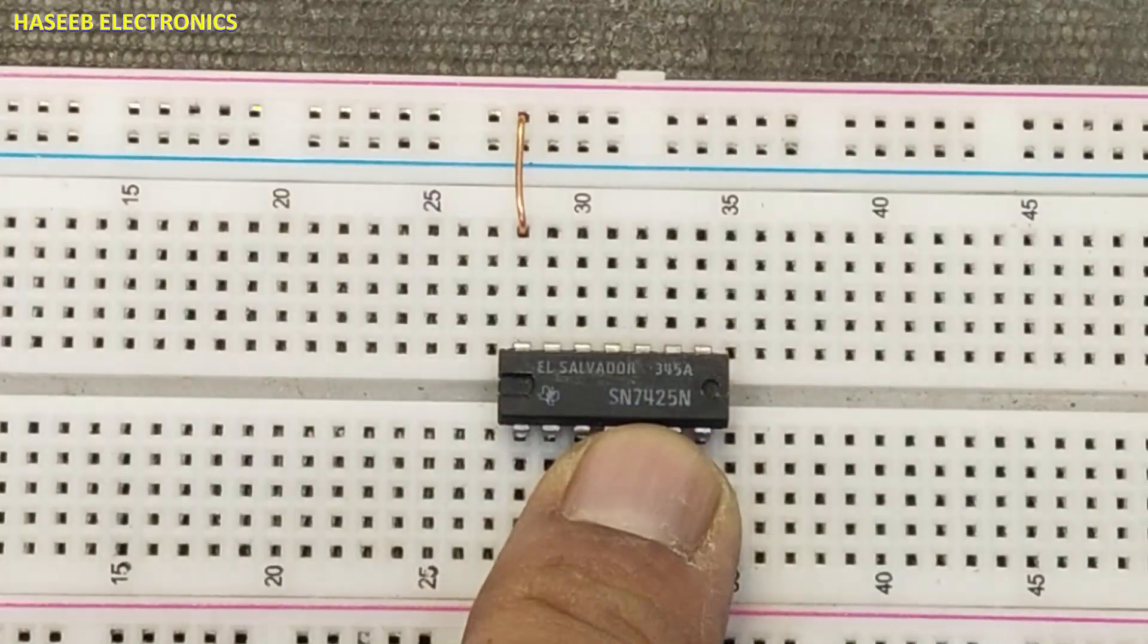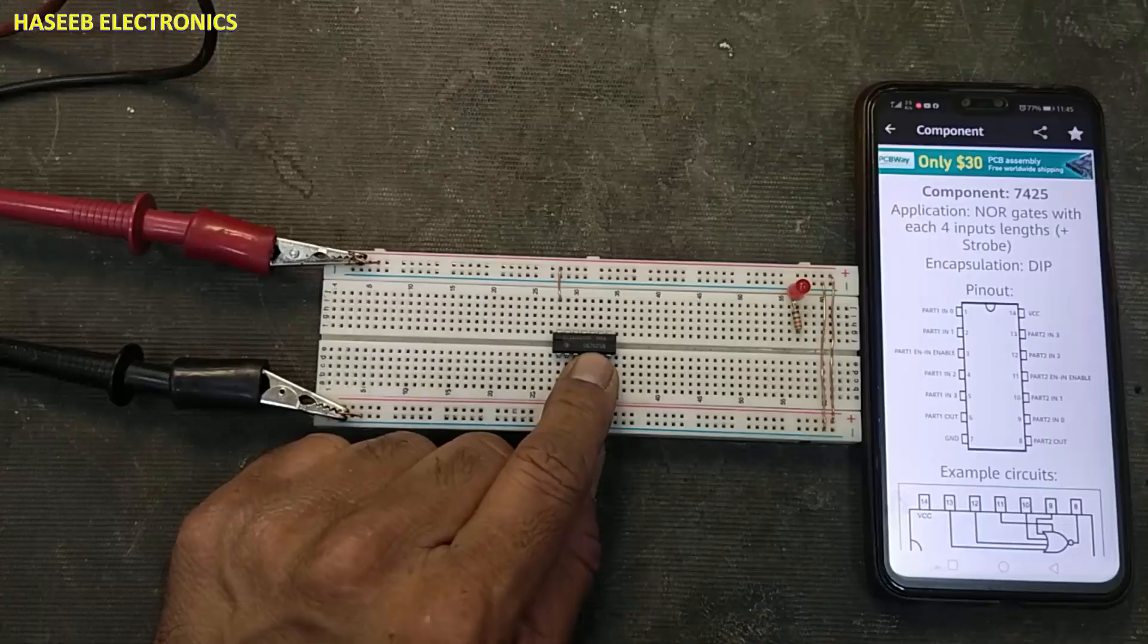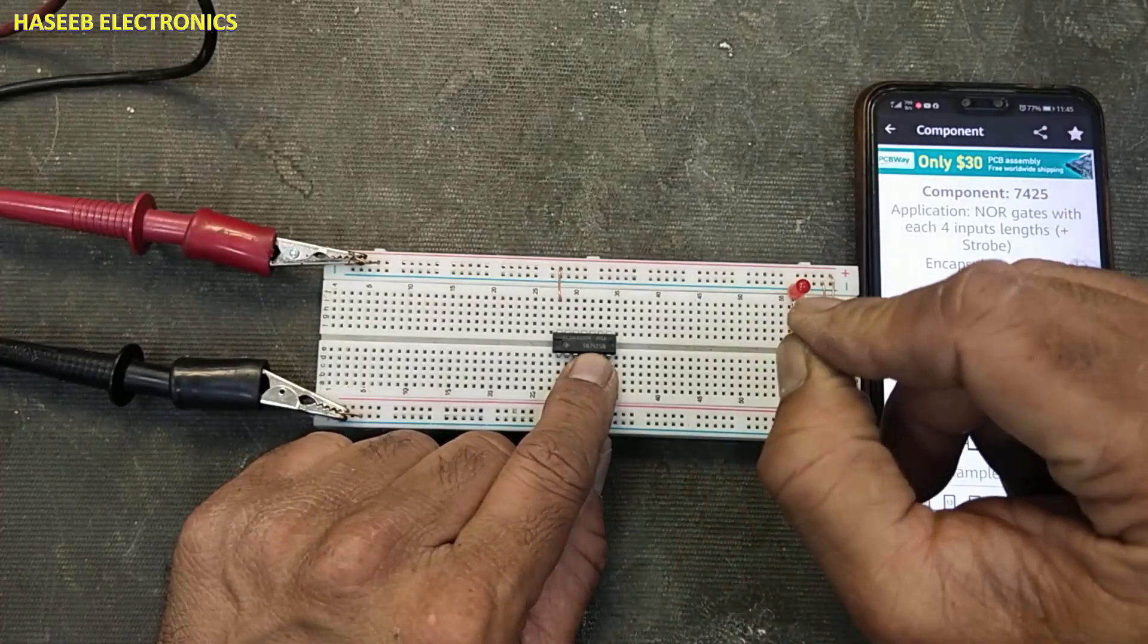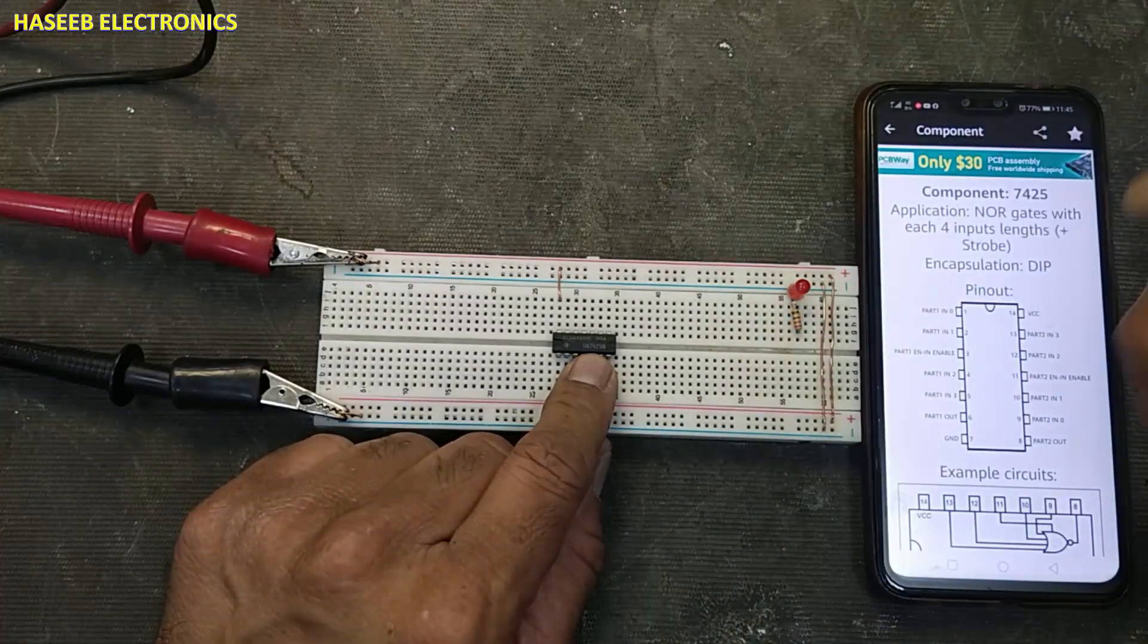7425, 5425, LS25, S25, HC25, HCT25, F25. All are in same family.